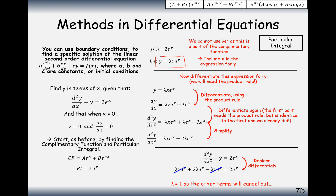Hopefully that's all a recap of the previous videos, but really highlighting: when you have an overlap between your complementary function and your particular integral, you must multiply your suggestion by x. So the particular integral is 1·x·e to the x.